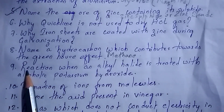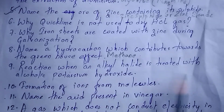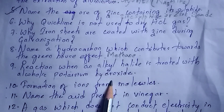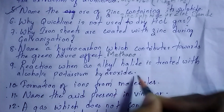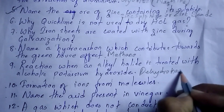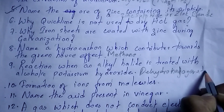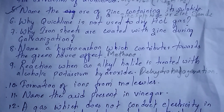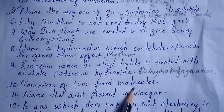Next question: name the reaction when an alkyl halide is treated with alcoholic potassium hydroxide — it is dehydrohalogenation. Next question: formation of ions from molecules — this process is known as ionization.